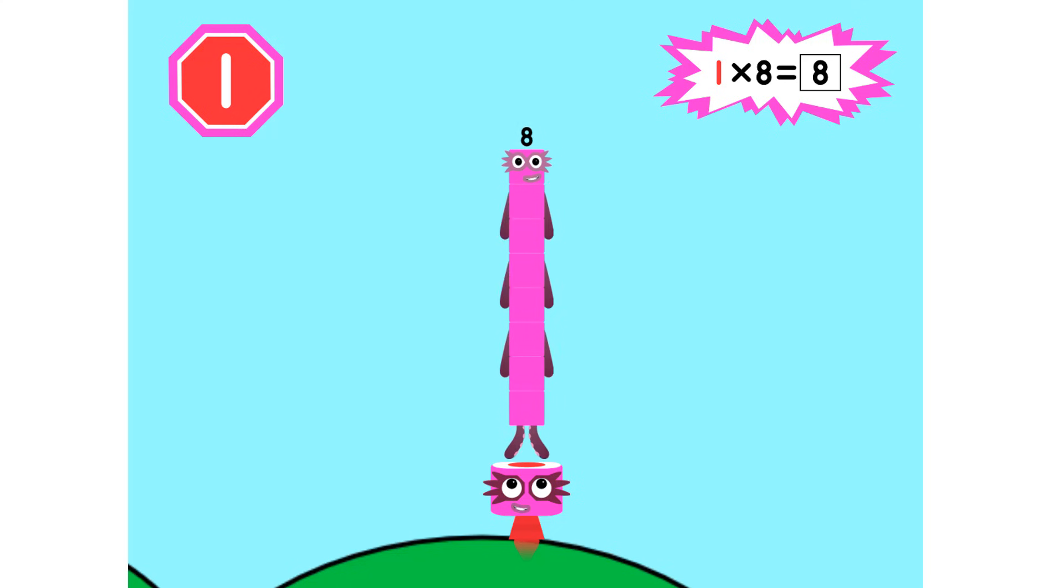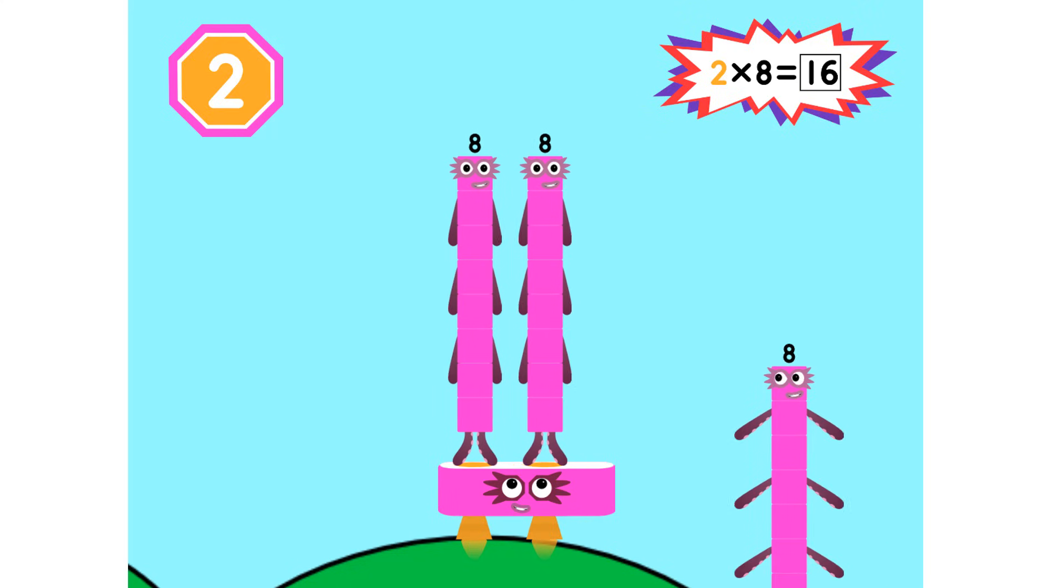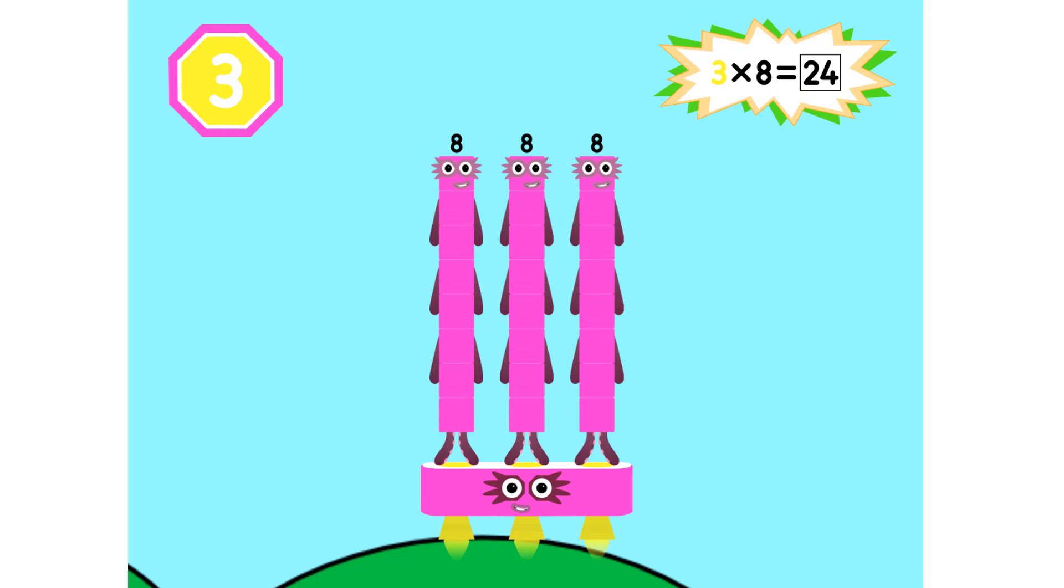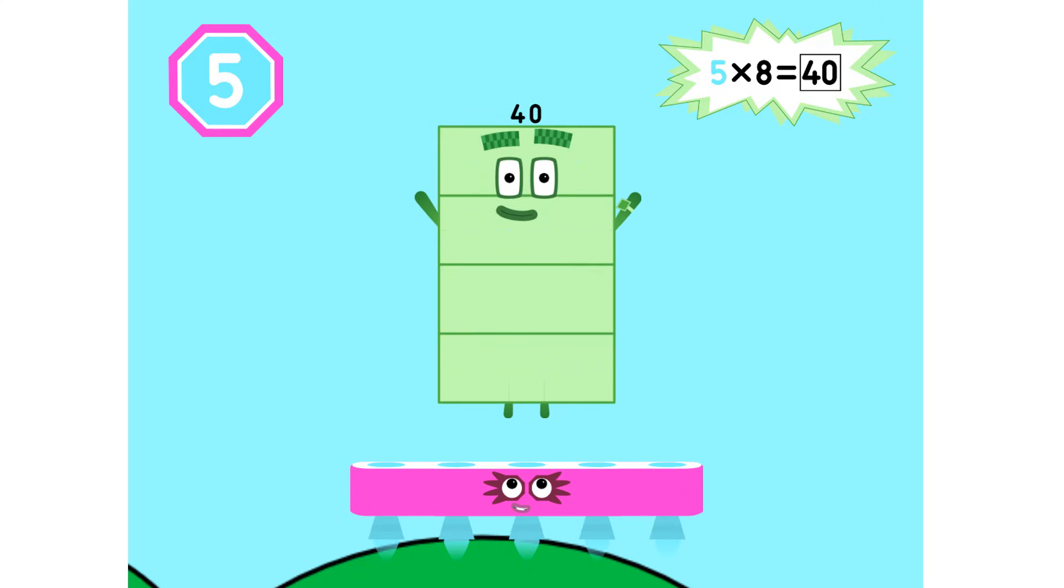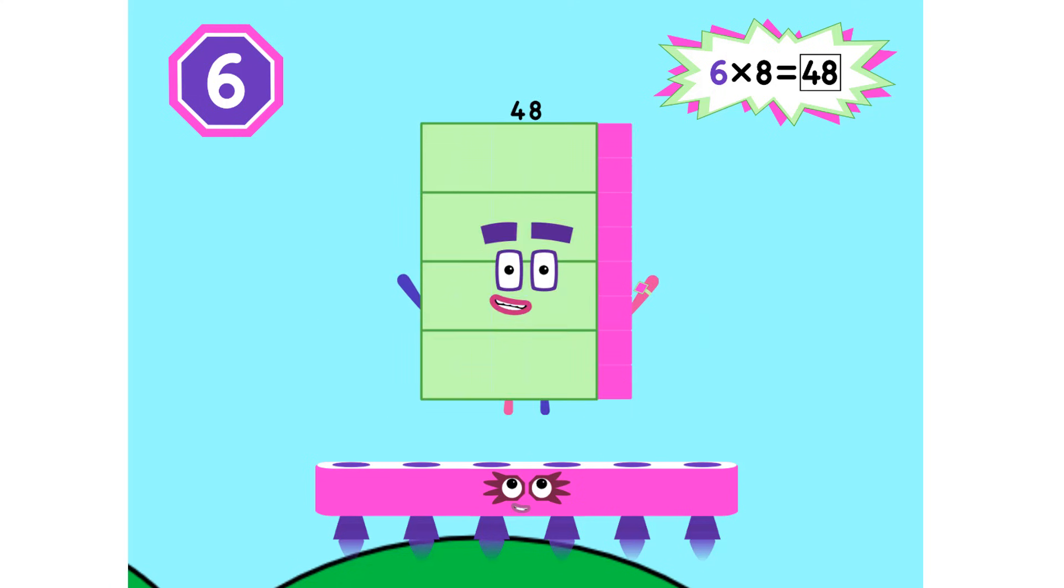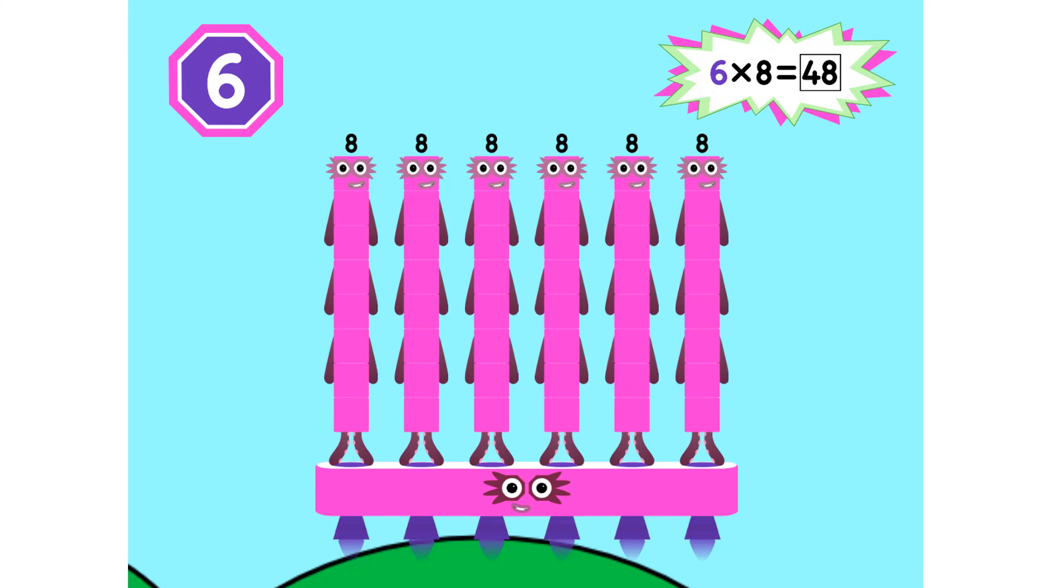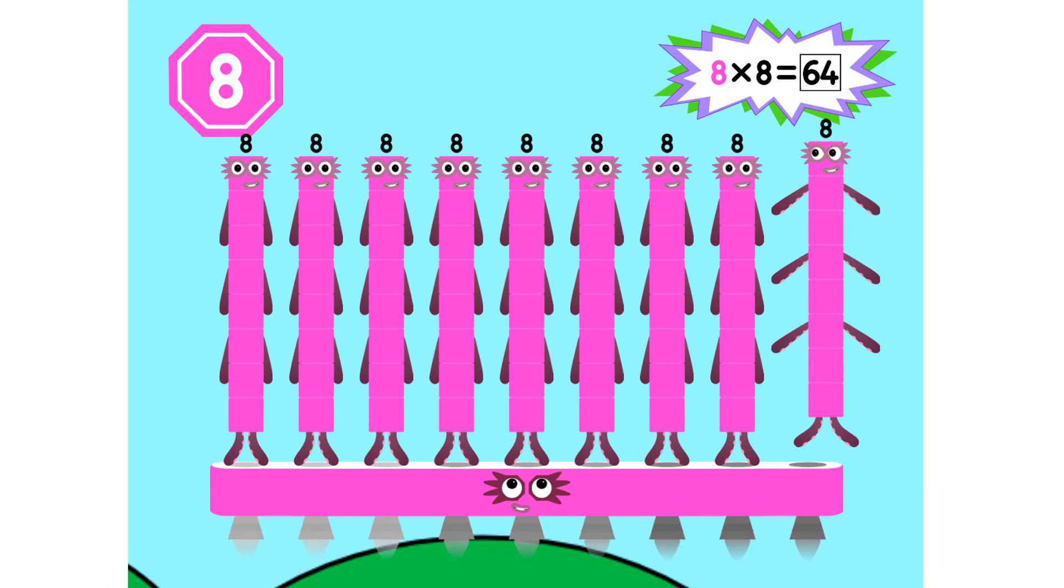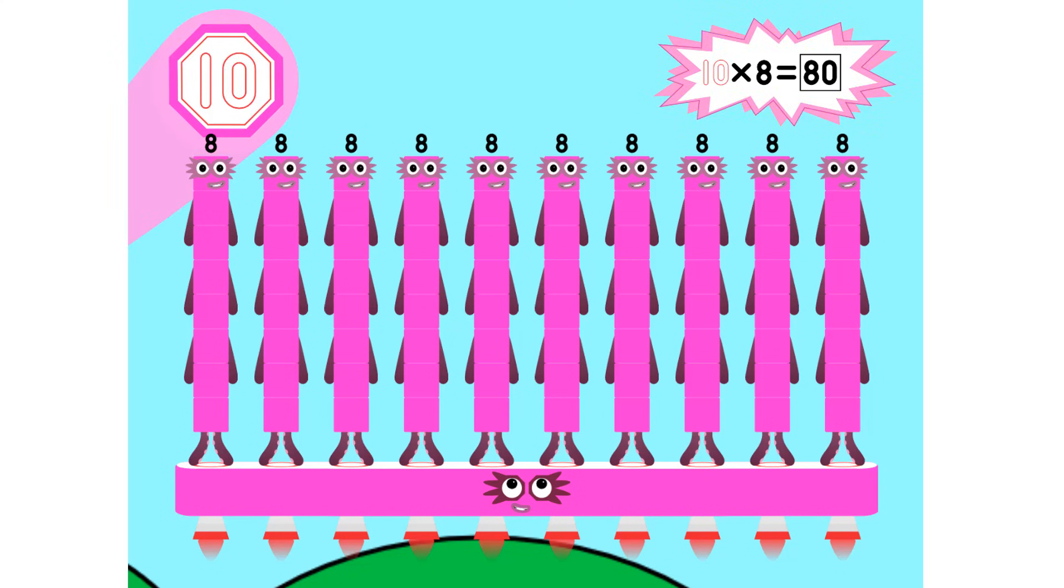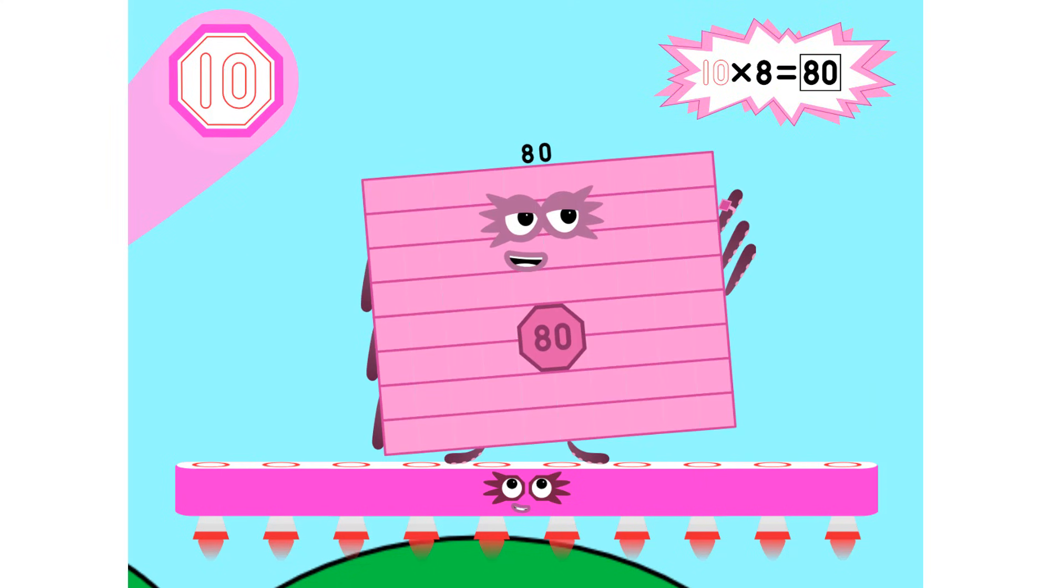1 8 is 8, 2 8s are 16, 3 8s are 24, we will heed the call 4 8s are 32, 5 8s are 40, 6 8s are 48, we'll catch you when you fall 7 8s are 56, 8 8s are 64, 9 8s are 72. Here's the biggest of them all, the super 8 who has it all, 10 8s are 80.